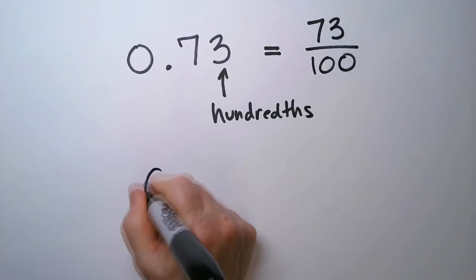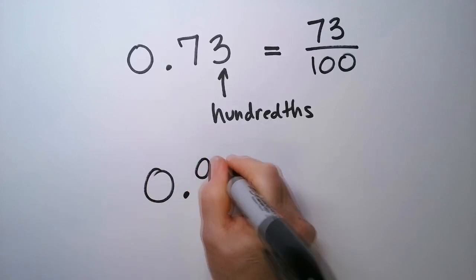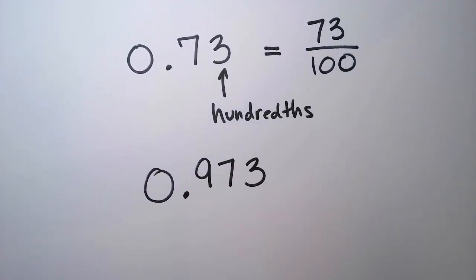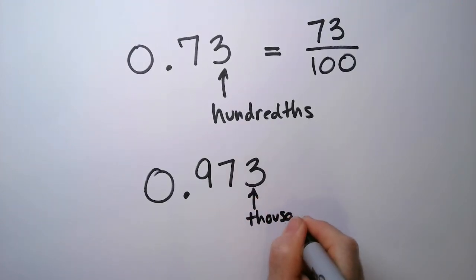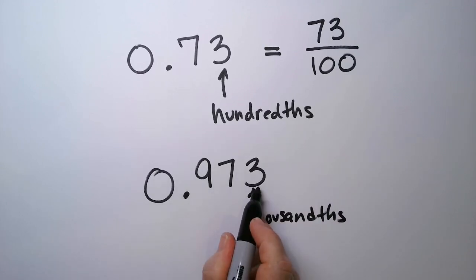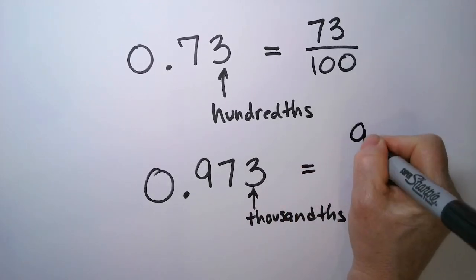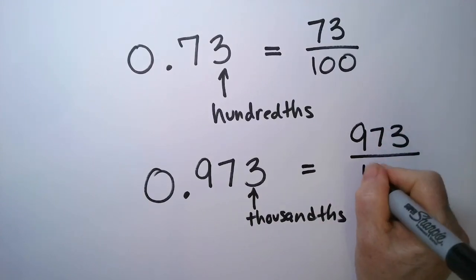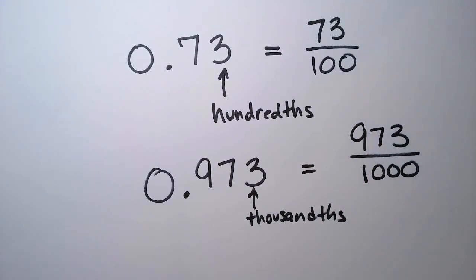Let's do one more. How about 0.973? So this here, this is the thousandths place. So tenths, hundredths, thousandths. So you just write 973 on the top and 1,000 on the bottom.